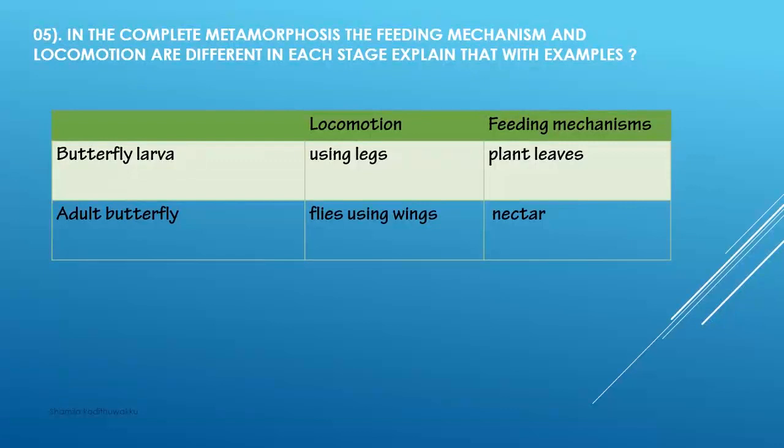First of all, we discuss about the life cycles of butterfly. In butterfly larva, locomotion uses legs, but adult butterfly locomotion uses wings. Butterfly larva feeds on plant leaves, but adult butterfly feeds on nectar. So there are many differences among different stages in the life cycle.